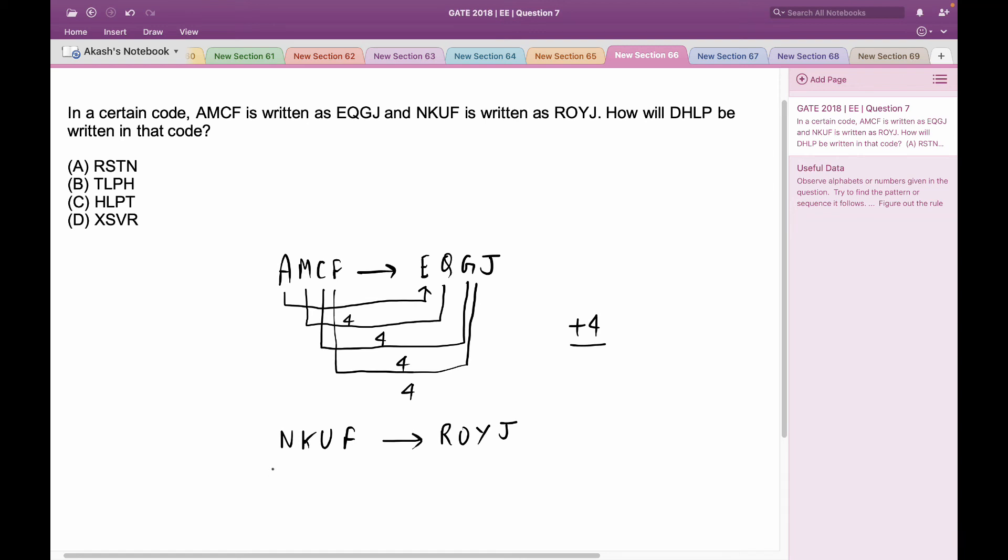Now let us apply this rule for the given code DHLP which would yield me HLPT which matches with option C. So option C is the right answer. Thank you.